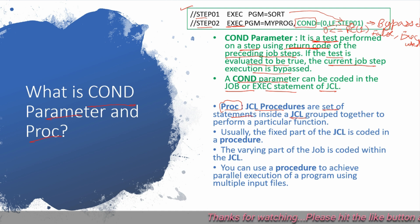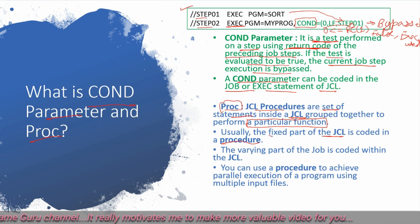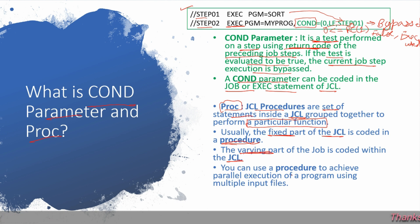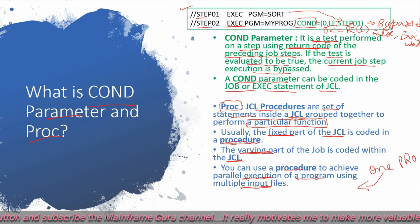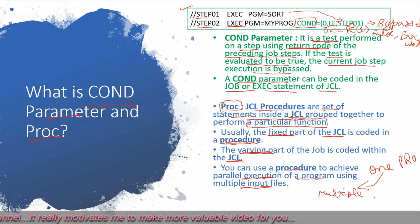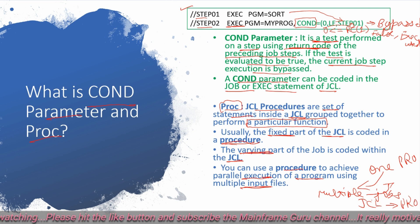Next question is about PROC. We call PROC a JCL procedure. These are a set of statements inside a JCL grouped together to perform a particular function. Usually the fixed part of JCL is coded in a procedure, and the varying part is coded in the JCL. You can use a procedure to achieve parallel execution of a program using multiple input files — one PROC can be used in multiple jobs, passing different parameters or files from the JCL to the PROC, enabling parallel execution.